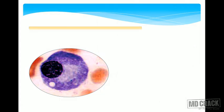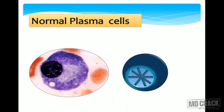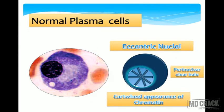Normal plasma cells appear in the bone marrow with an eccentrically placed nucleus showing cartwheel appearance. There is a perinuclear clear halo, said to be due to the high amount of Golgi apparatus present in plasma cells, because these cells secrete immunoglobulins that are modified by the Golgi apparatus. The increased number of Golgi apparatus causes this perinuclear clear halo.